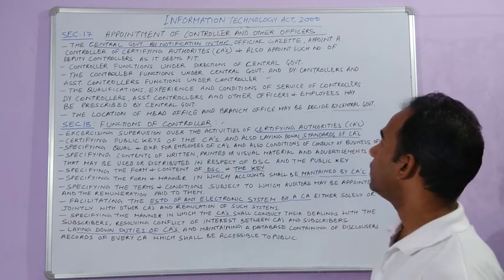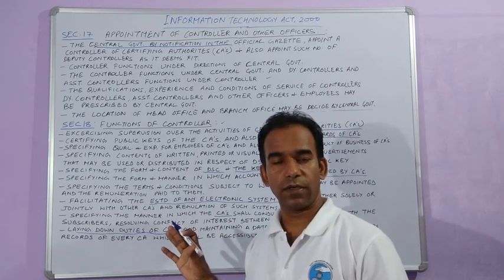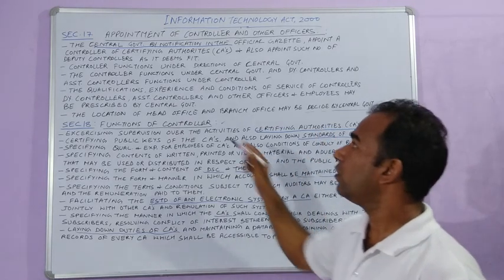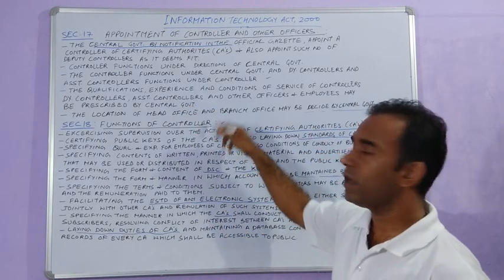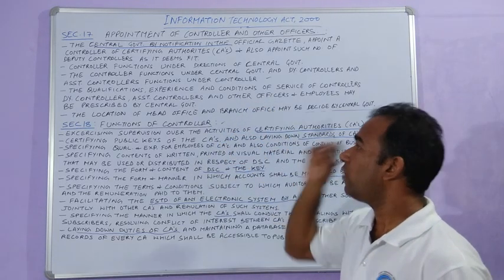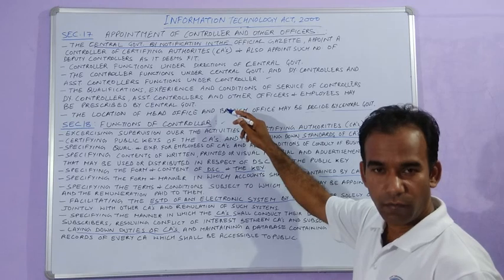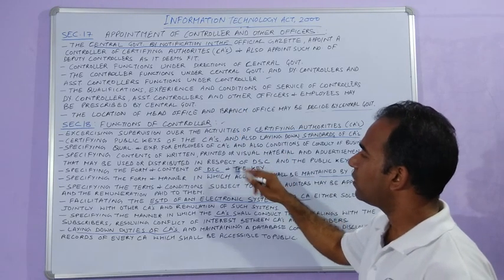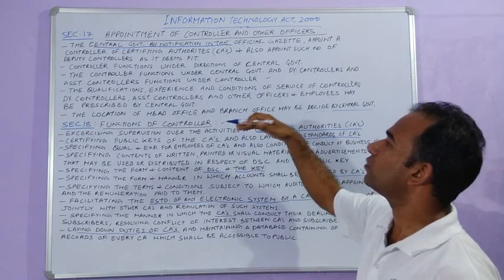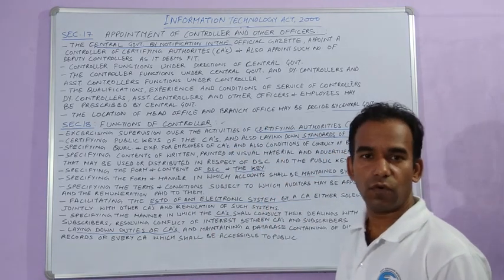So friends, this is all for today. If you compare sections 17 and 18, you will find that in Section 17, everything is appointed or controlled by the central government, while in Section 18, everything is controlled by the controller — these are the functions of the controller. The controller is appointed by the central government, and the guidelines for the controller's work are decided by the central government.